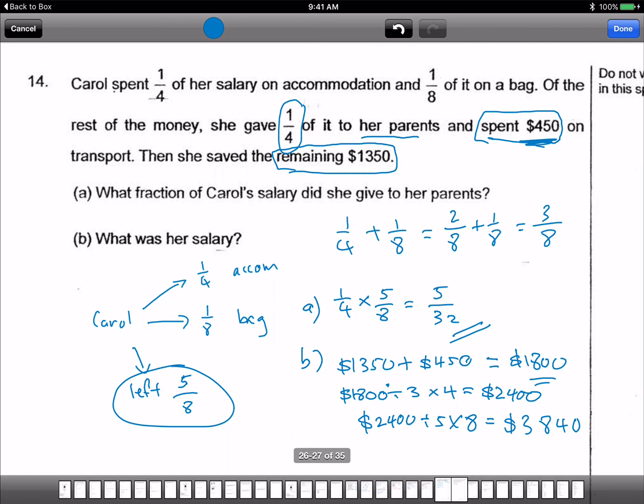So this is another equivalent ratio, equivalent fraction or equivalent ratio type of question. How many have you seen already so far? $3,840 - $3,000, $800, and $40. Okay, another equivalent ratio.